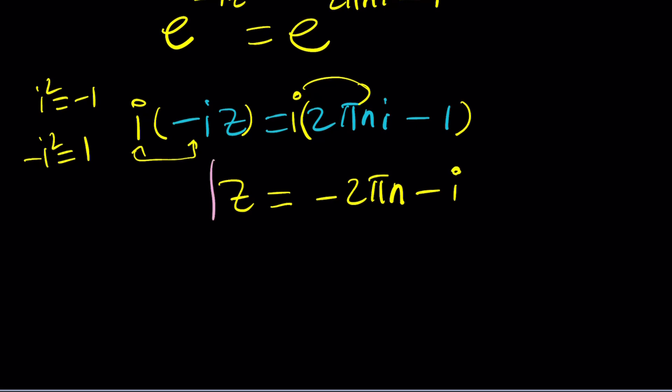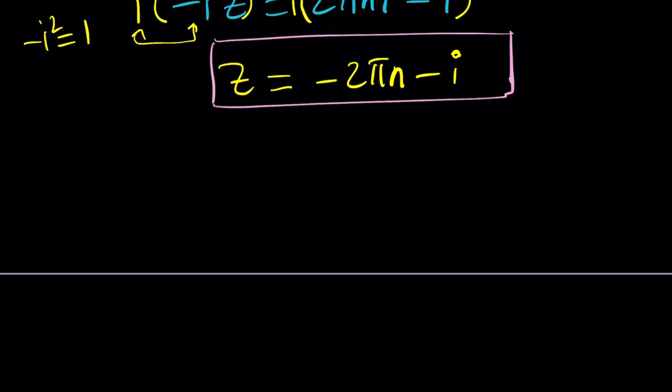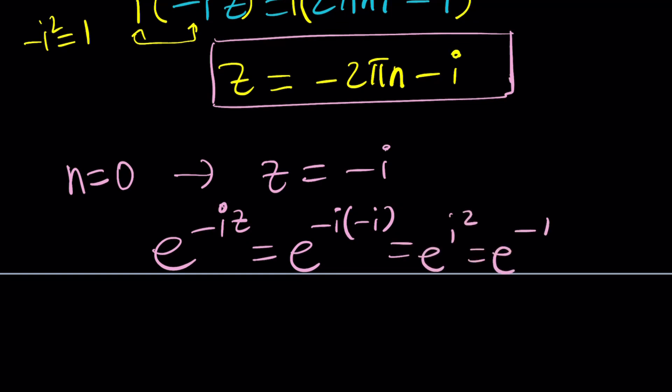But let's go ahead and plug it in. You can just directly plug it in or you can test some specific values such as n equals 0. If n is 0, z equals negative i. How nice. And our equation said e to the power negative i z, right? So replace z with negative i. You're going to get e to the negative i times negative i, which is e to the i squared, which is e to the power negative 1, which is 1 over e. Yay! This particular solution worked. And if you test the other ones they should also work, and you can definitely check out the general solution as well.